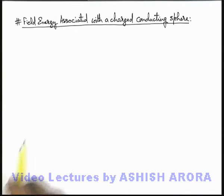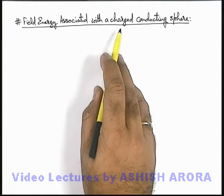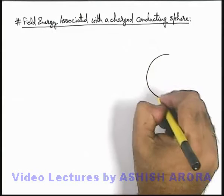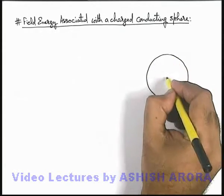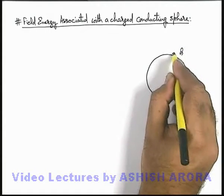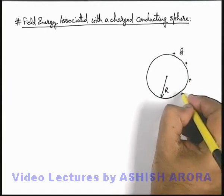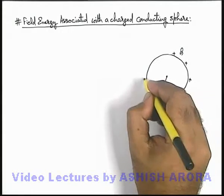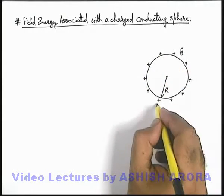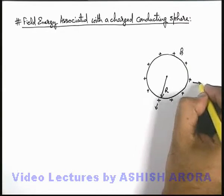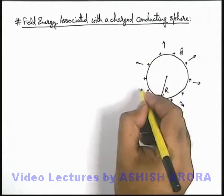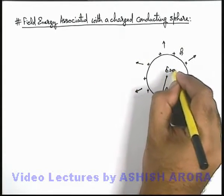Let's discuss the field energy associated with a charged conducting sphere. Consider a conducting sphere of radius r. If some charge q is given to it, as a conducting sphere, the whole of its charge will spread on its outer surface. Due to this, the electric field exists in a radially outward direction from its surface to infinity. Inside the conducting sphere, the electric field is equal to zero.